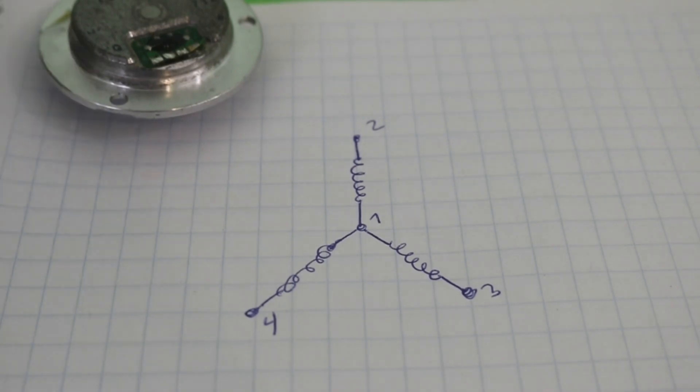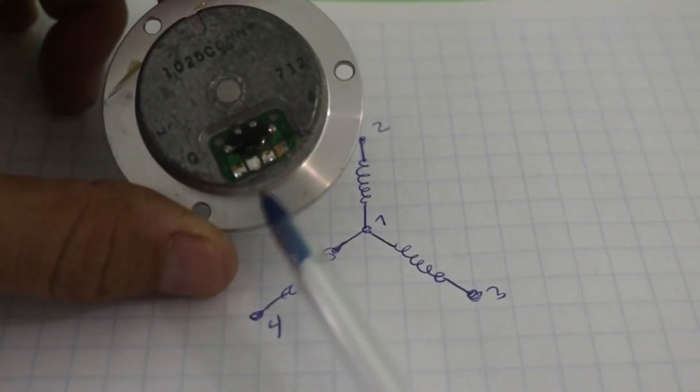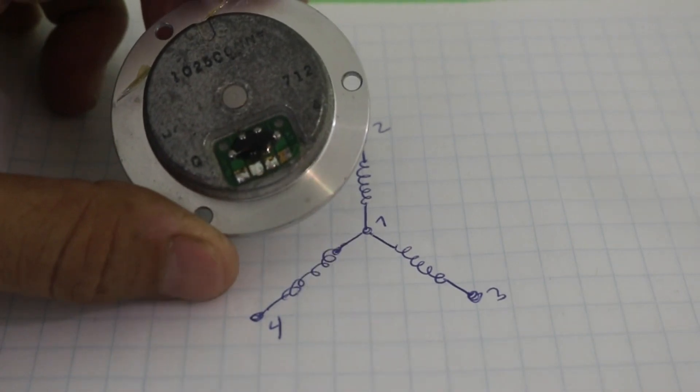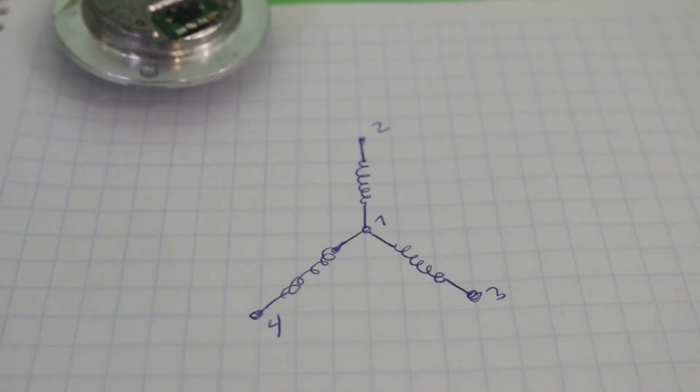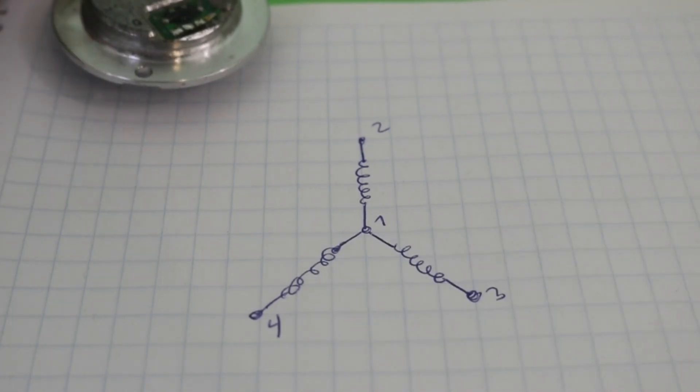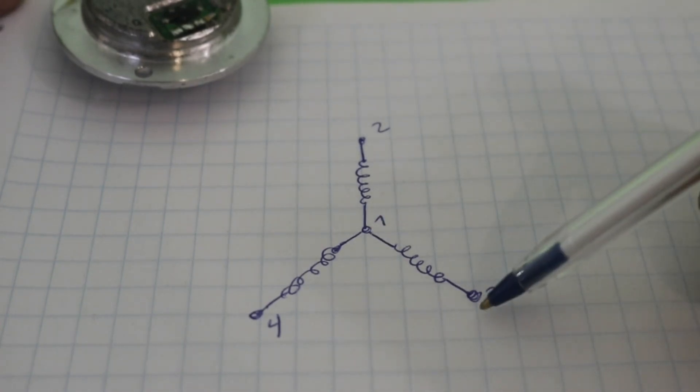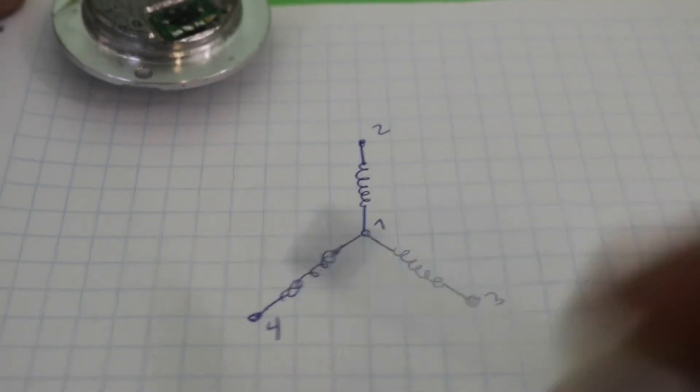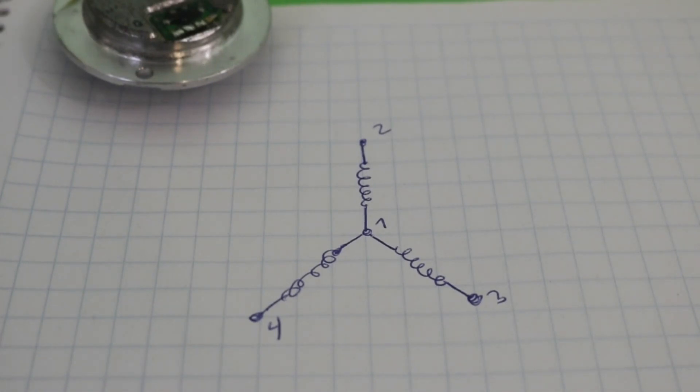You will use your multimeter and check the resistance between each pair of terminals. Why? Because, suppose that each coil has a resistance of 1 ohm, therefore, if you check between 1 and 2, you will get a reading of 1, between 1 and 3, and also between 1 and 4, you will obtain 1 ohm.